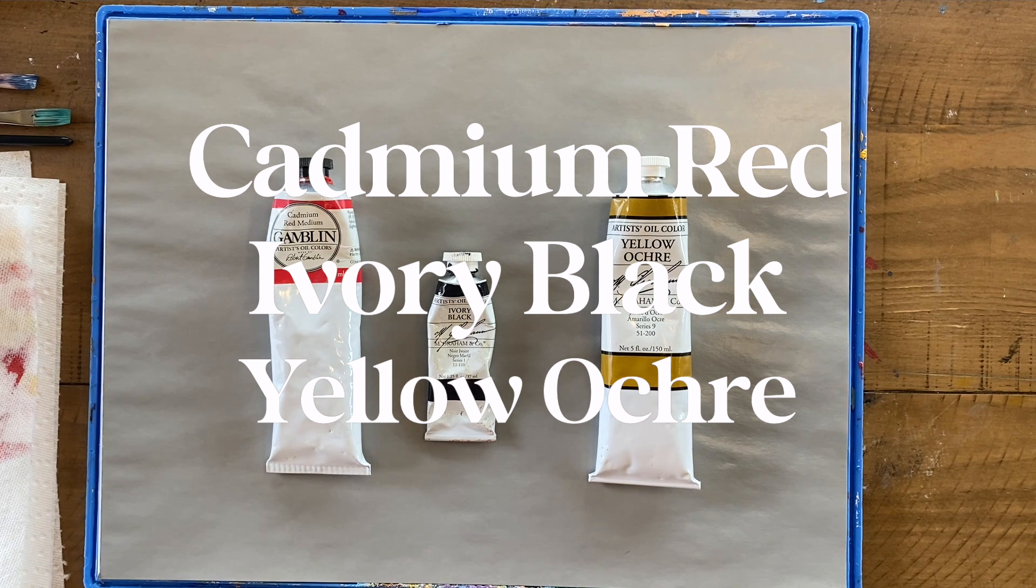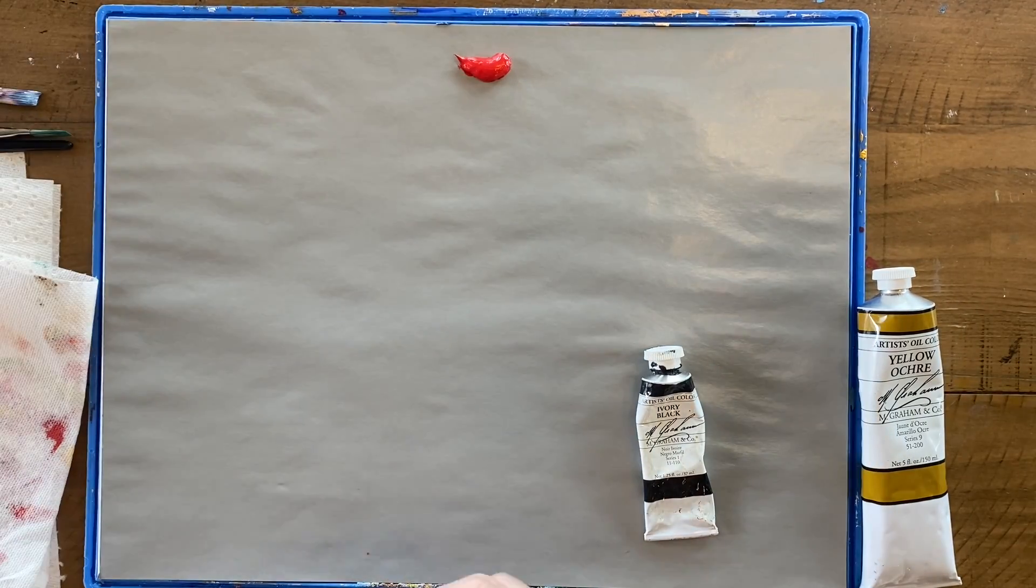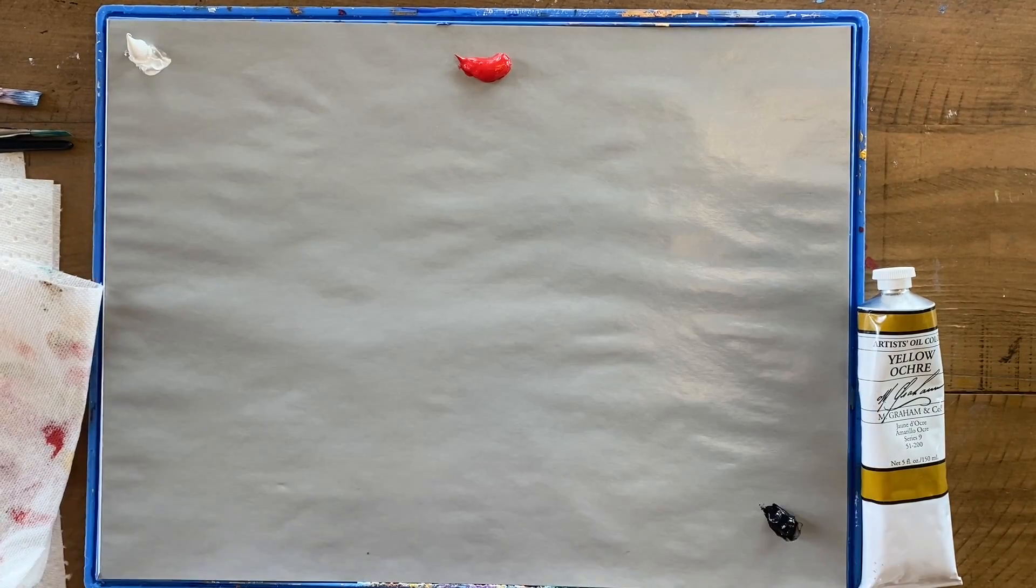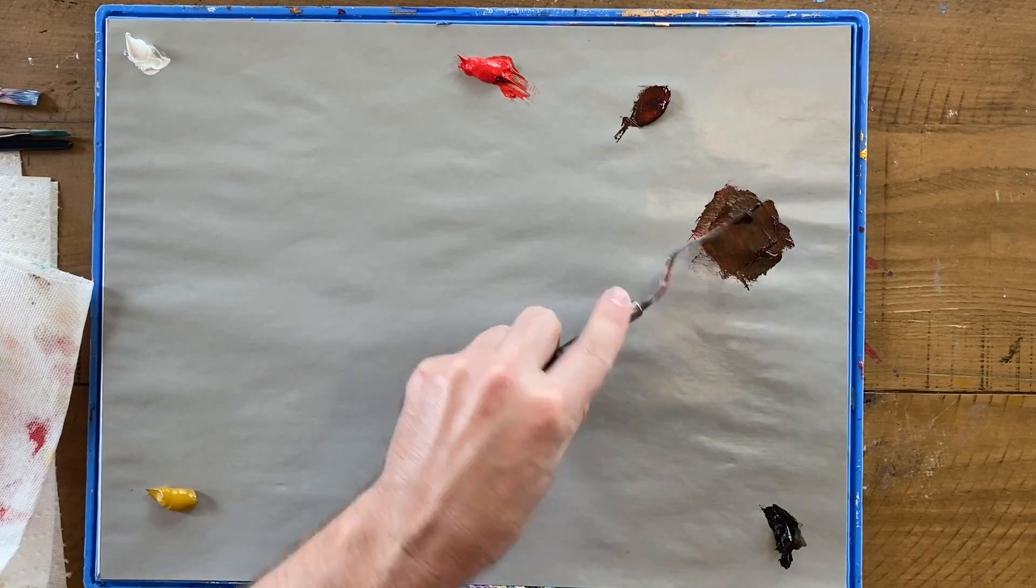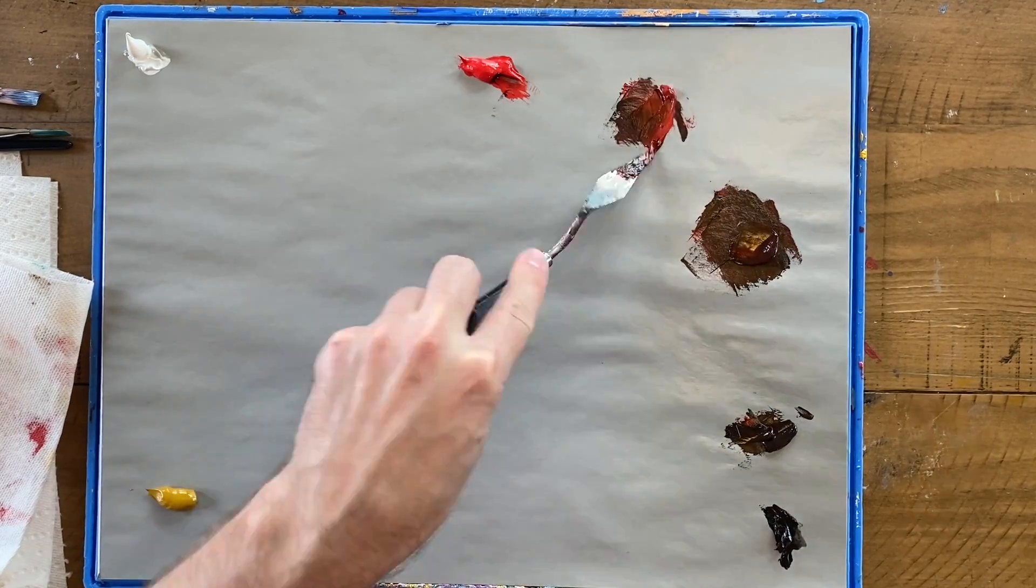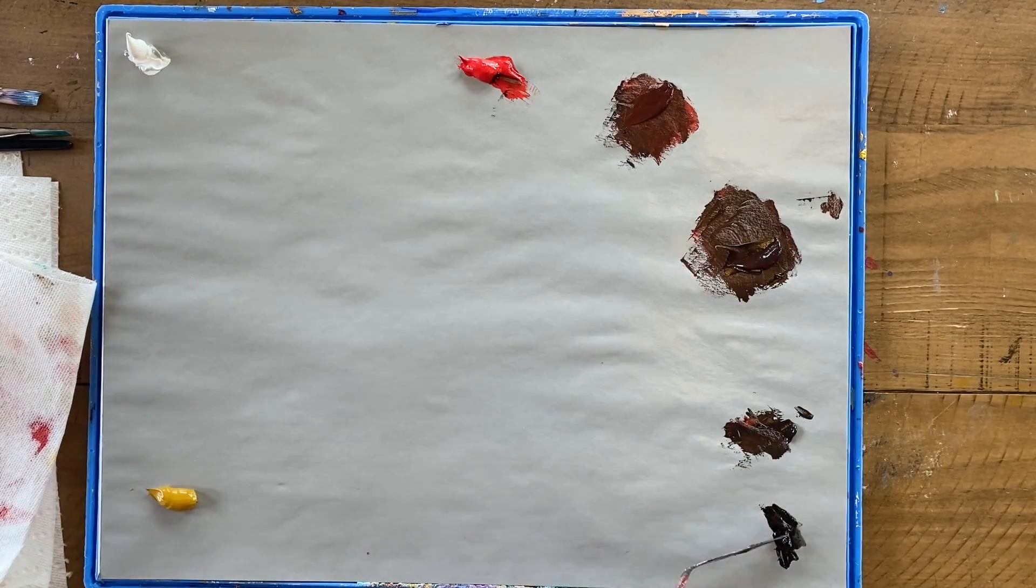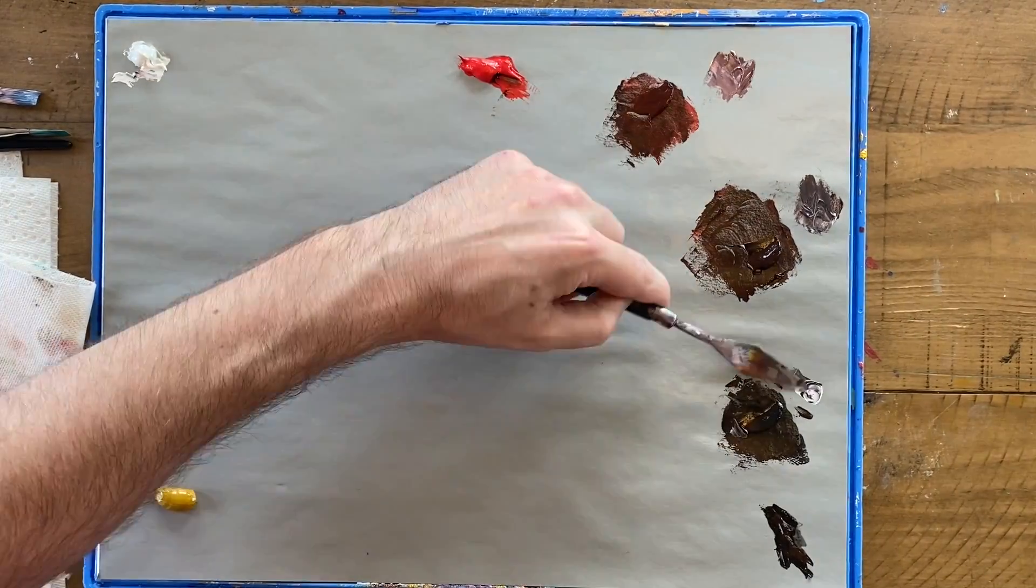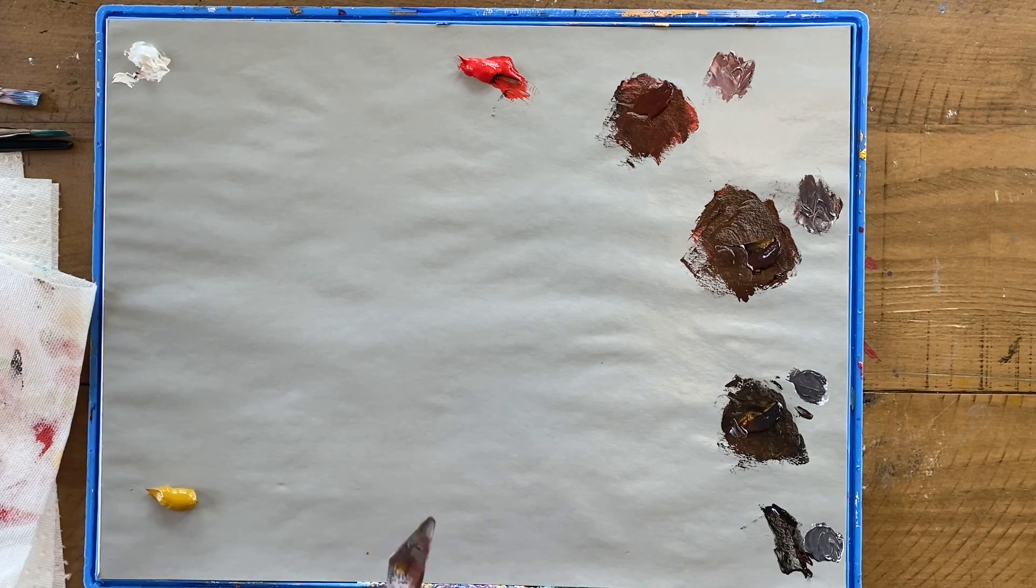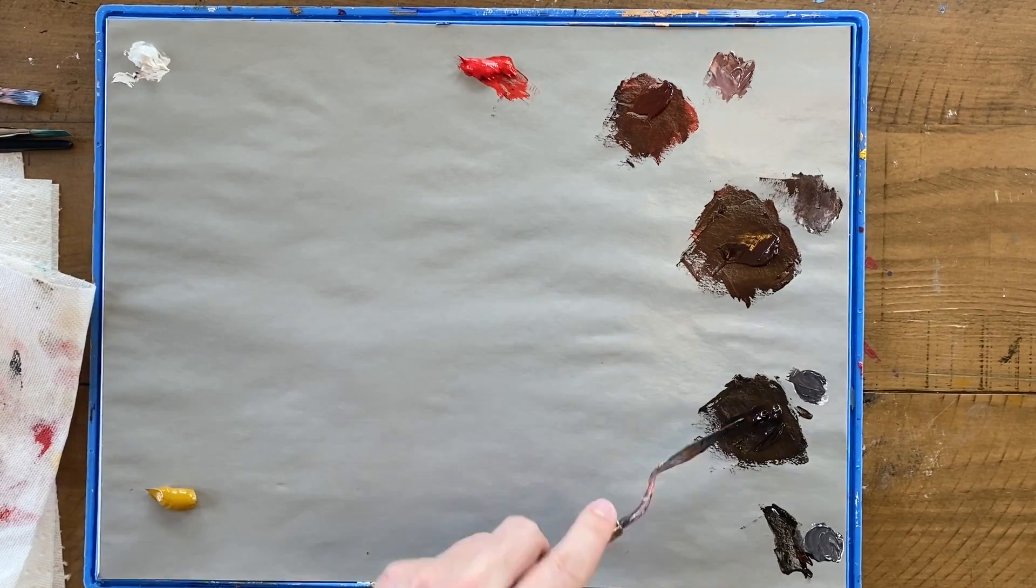So for our third set of primaries, we're going to be doing something totally different. We're going to be using the color red, black, and a really dull yellow. So you may ask yourself, why would I ever choose to limit myself by taking three primary colors that are already pretty neutral even before I mix anything together? One of the reasons is if you choose a set of primary colors that already have limitations built into them, the colors that you end up mixing together will have a uniformity and a coherency that is really beautiful.